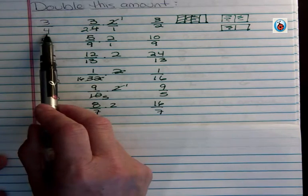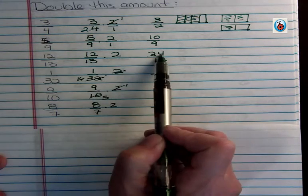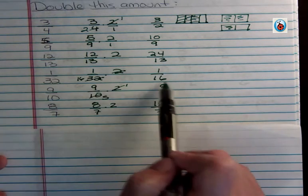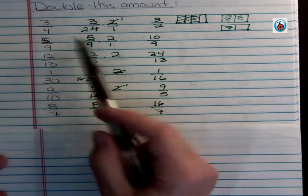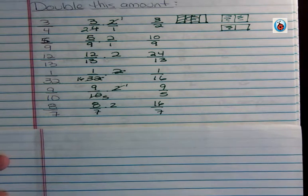Cut four in half, get a two. Double five, get a ten. Double twelve, get a twenty-four. Cut thirty-two in half, get a sixteen. If you can cut it in half, that's your first choice. If you can't, you double the top. And that's doubling an amount when you have a fraction.